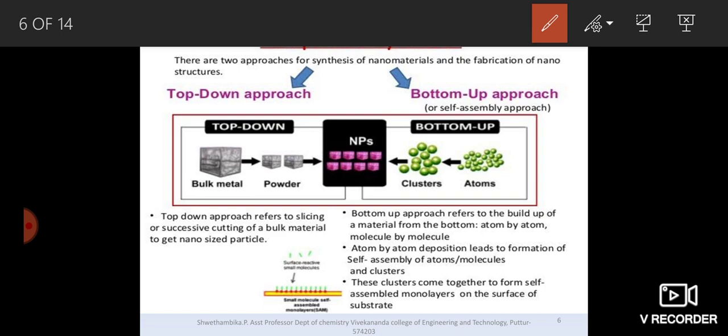This also explains the same, that is approaches of synthesis, but here we have an added point. Usually top-down approach refers to slicing or successive cutting of bulk material to get nano-sized particle. Most of the time top-down approach involves physical approaches like cutting, grinding, etc. And bottom-up approach would involve some chemical synthesis. Bottom-up approach refers to build up of the material from the bottom, atom by atom, molecule by molecule. Here atom by atom deposition leads to the formation of self-assembly of atoms and you call that self-assembly as cluster and then these clusters come together. They form self-assembled monolayers on the surface, thereby we create a nanoparticle.